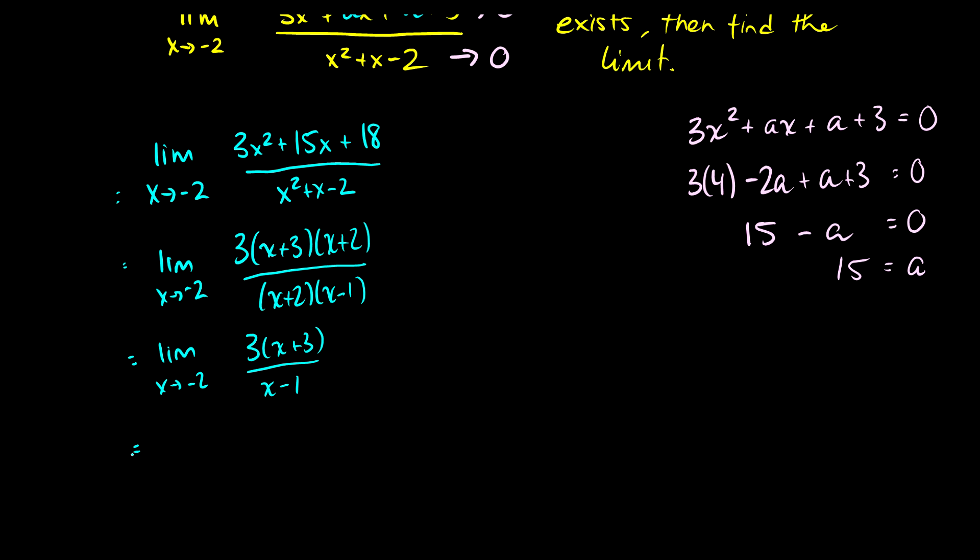Now if we plug negative 2 in there we're going to get 3 times 1 over, well negative 2 minus 1 is just negative 3. So our limit is going to be equal to negative 1.